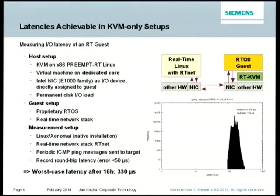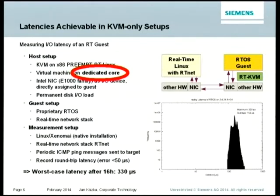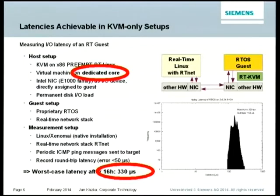This is a slide from a previous presentation about making KVM real-time capable. We measured latency in a setup between some real-time virtualized nodes and networking nodes. We dedicated a core to the virtualization task and the virtual machine. In this scenario running through KVM, we came up with maximum latencies of about 330 microseconds. Depending on the scenario, that could already be enough, but in other scenarios it is definitely too high.